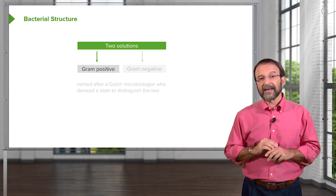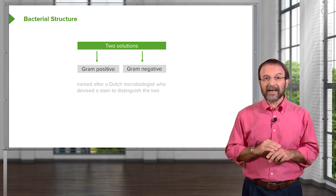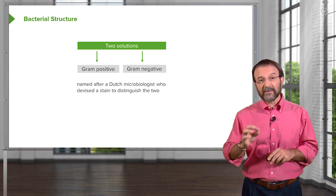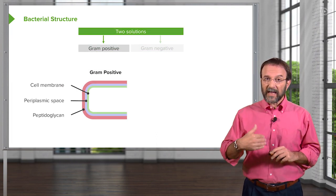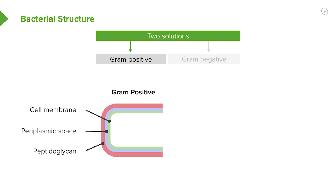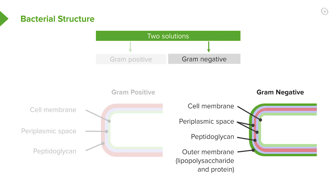There are two solutions to the problem of protecting the cell membrane: gram positive and gram negative. These are named after a Dutch microbiologist named Gram, who devised a stain to distinguish them. In gram positive bacteria, a thick layer called the peptidoglycan sits on top of the cell membrane, with a periplasmic space between the two. In gram negative bacteria, a thin layer of peptidoglycan is covered by a second outer membrane, creating two periplasmic spaces.